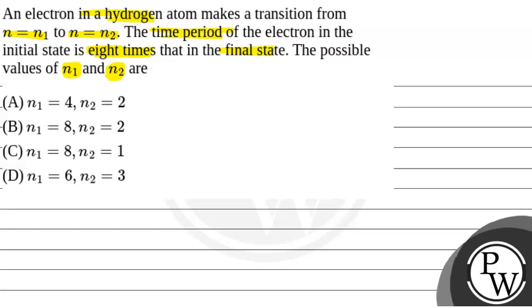Option A is n1 equals 4, n2 equals 2. Option B, n1 equals 8, n2 equals 2. Option C, n1 equals 8, n2 equals 1. Option D, n1 equals 6, n2 equals 3.